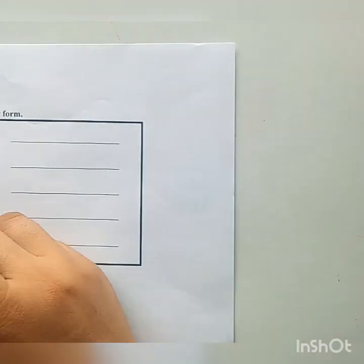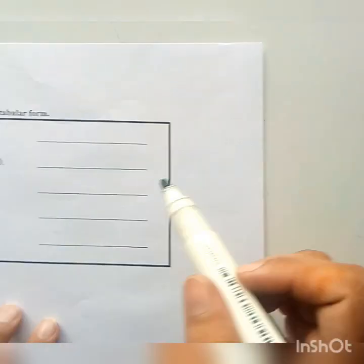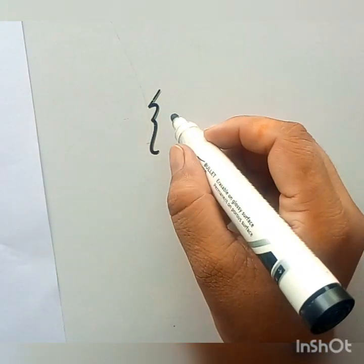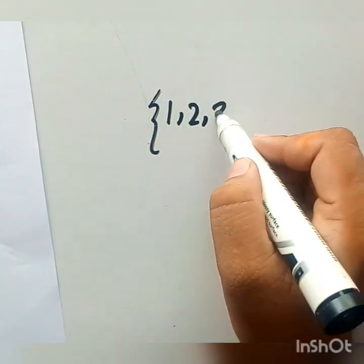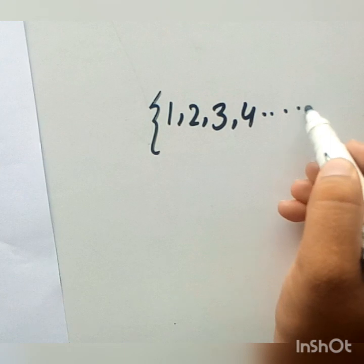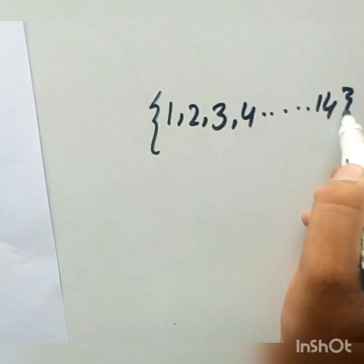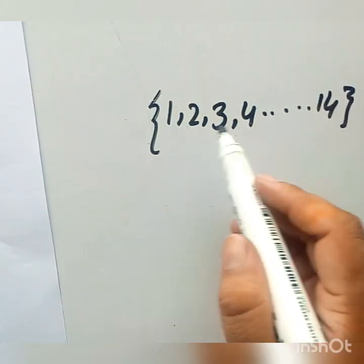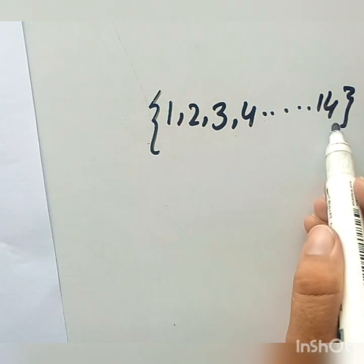First of all, the first is set of natural number less than 15. Set of natural number less than 15 that is 1, 2, 3, 4, up to 14. These are the natural numbers starting from 1 and is less than 15.